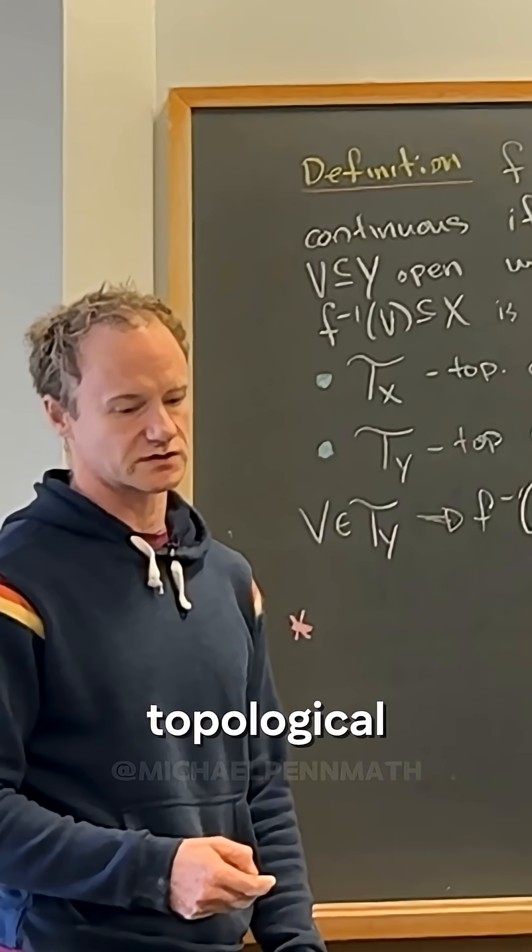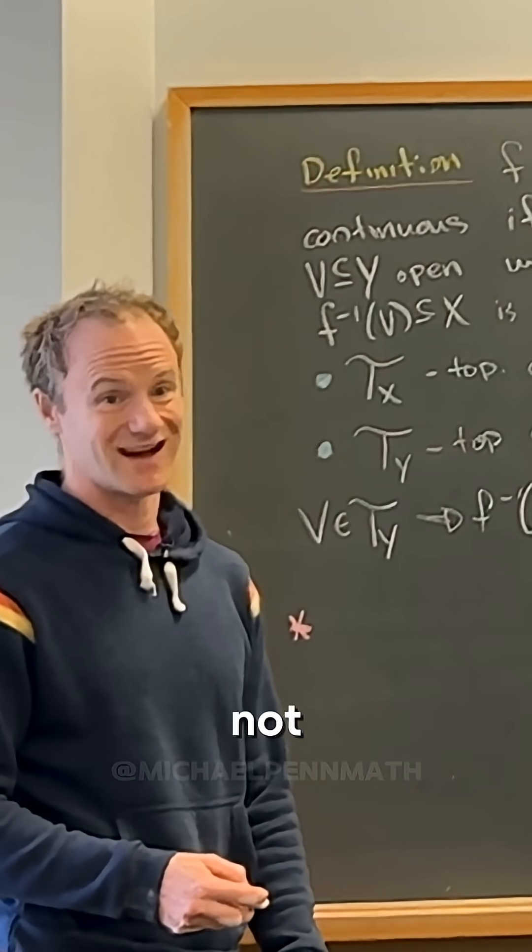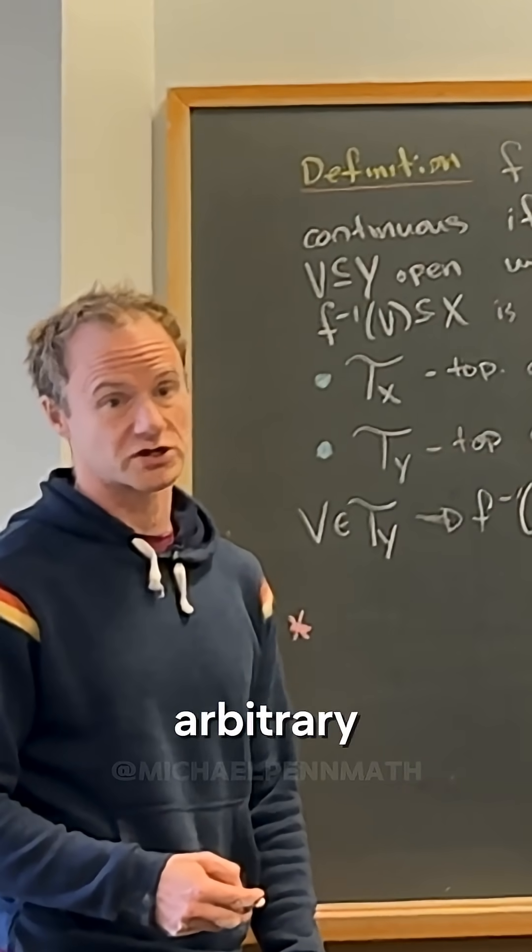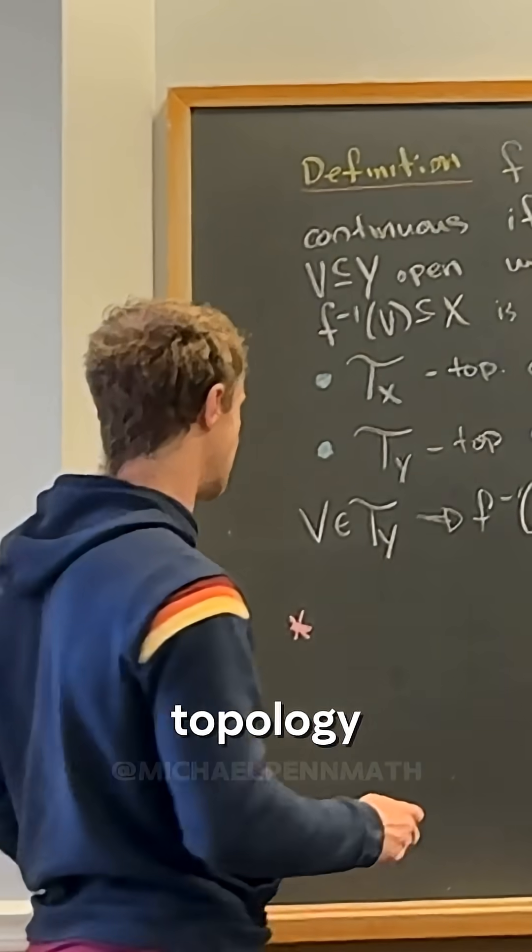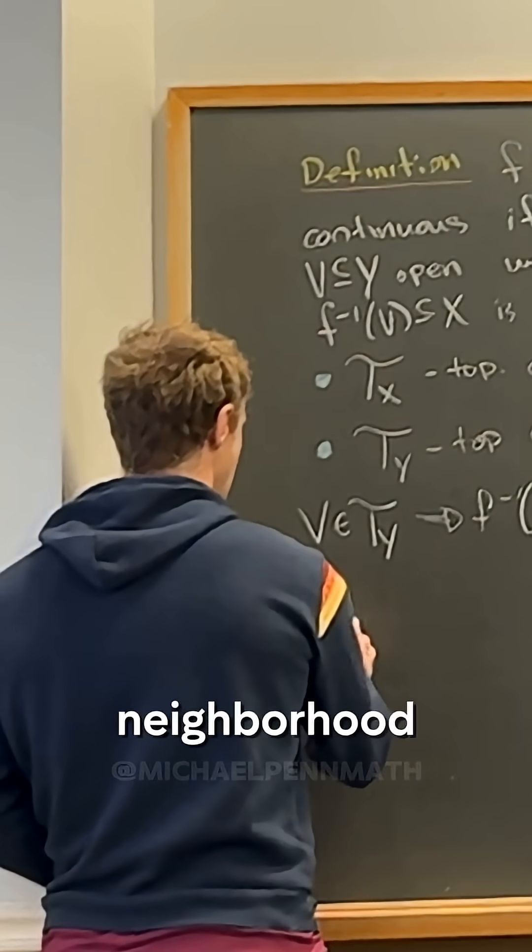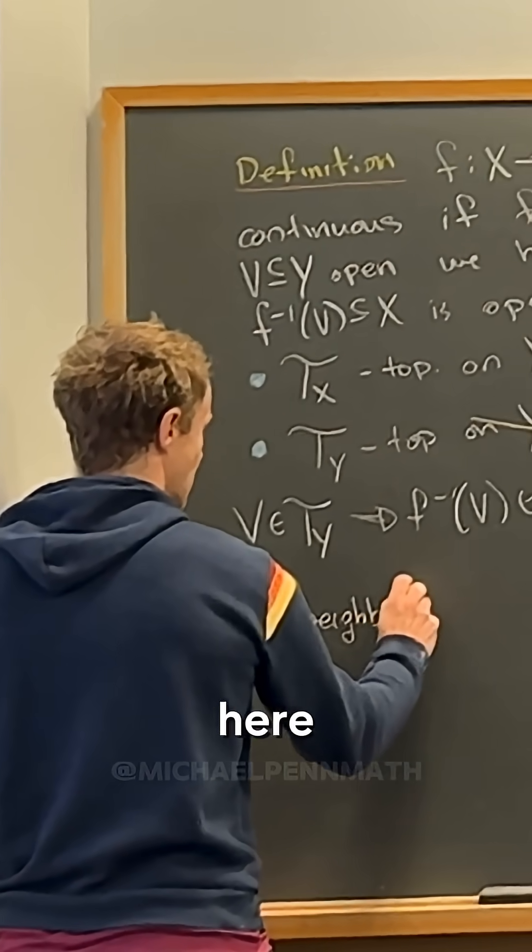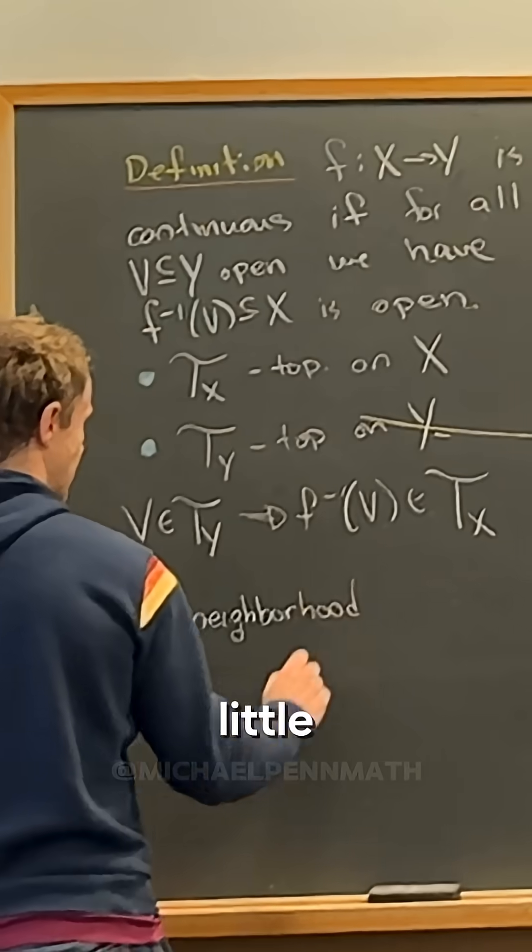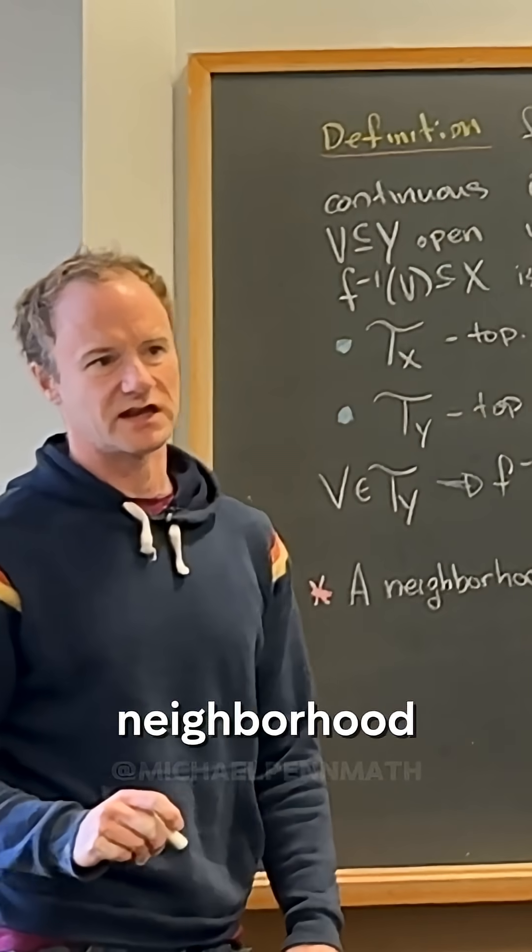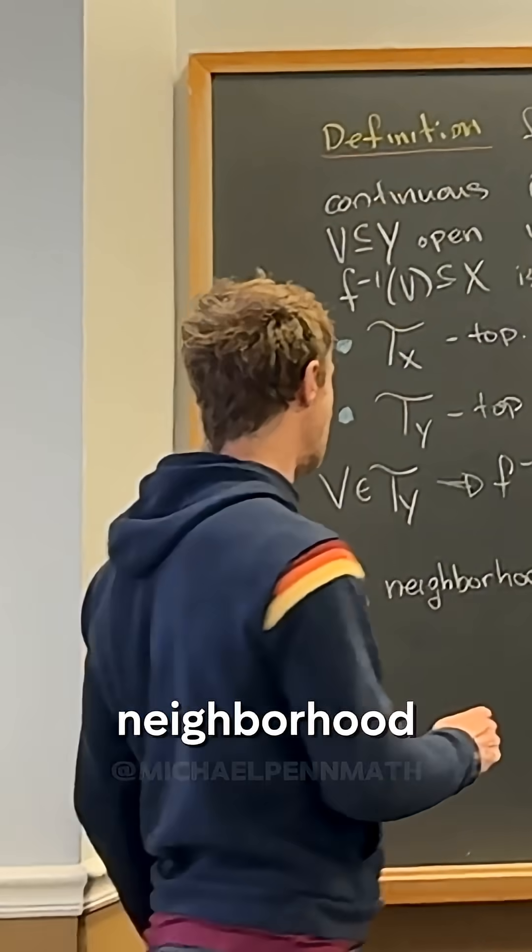This is just the topological definition of neighborhood. It's not going to be satisfying, so this is for an arbitrary topology. A neighborhood, sometimes you put the word open here and that's a little bit different than a neighborhood, but generally a neighborhood means an open neighborhood.